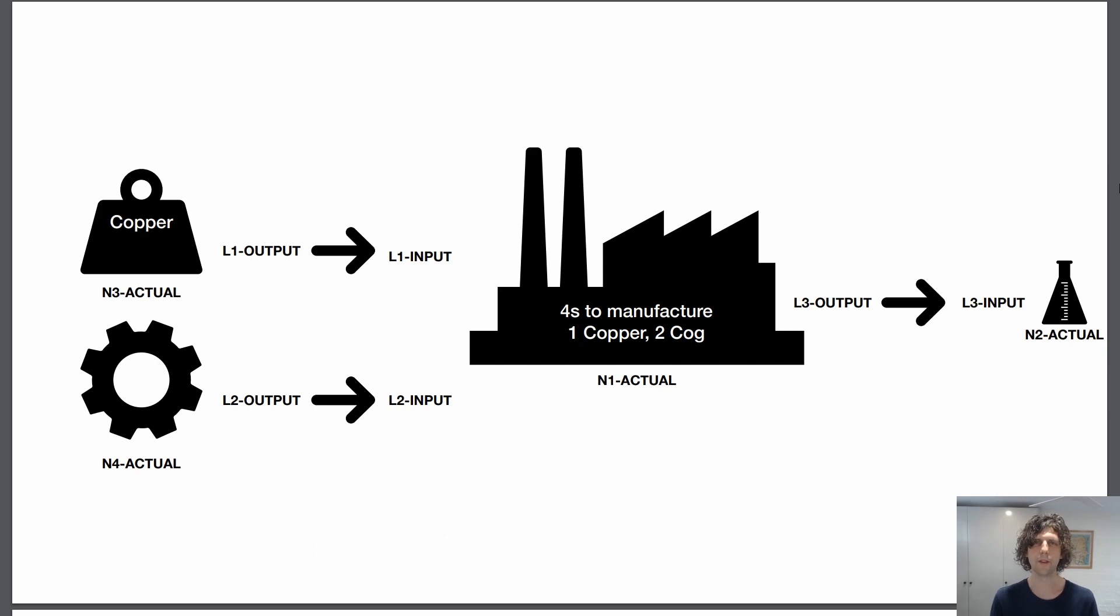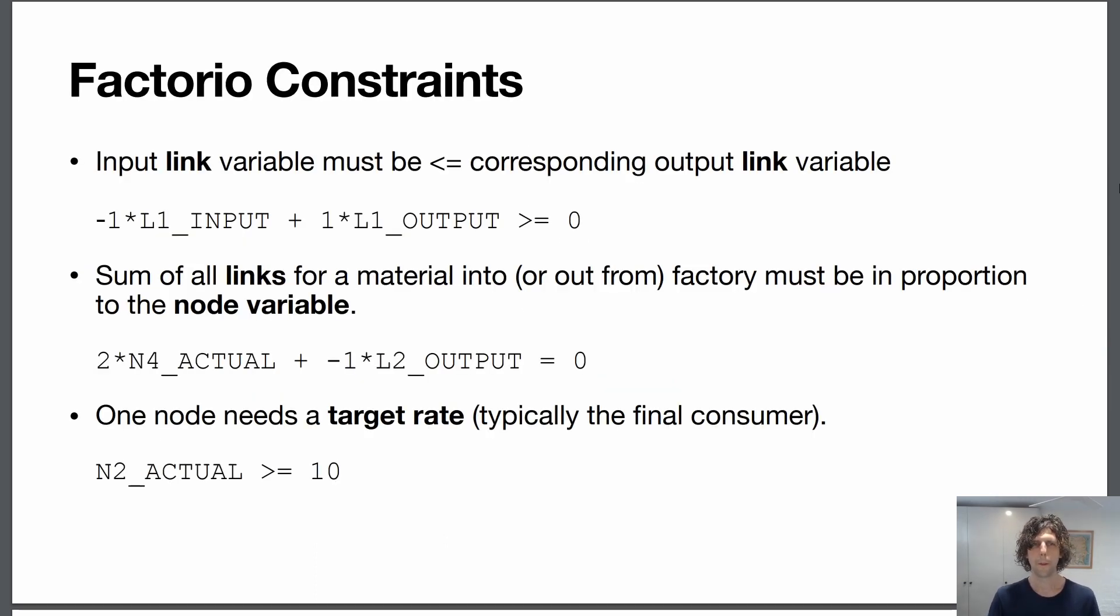So our first constraint here is that the input link variable must be less than or equal to the corresponding output link variable. This says that for a factory to consume out of the input it must have at least that amount of material available at the output.